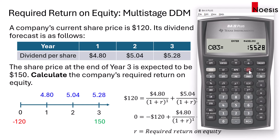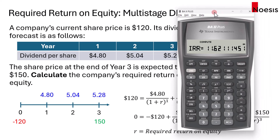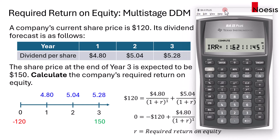Once you're done, press IRR and then press Compute — the CPT button — and you will get 11.62%. So this would be the company's required return on equity, based on the dividend forecast and the terminal price.